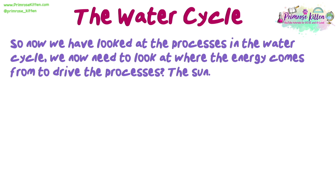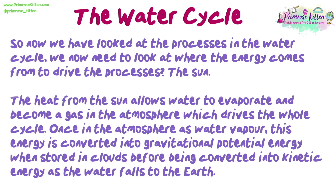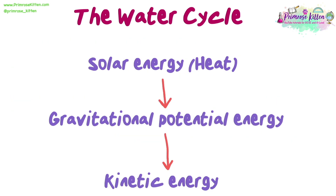Now that we have looked at the processes in the water cycle, we need to look at where the energy comes from to drive them. This is from the sun. The heat from the sun allows water to evaporate and become a gas in the atmosphere, which drives the whole cycle. Once in the atmosphere as water vapour, this energy is converted into gravitational potential energy when stored in clouds, before being converted into kinetic energy as the water falls to the earth. Here is an energy conversion flow chart to demonstrate this: solar energy (heat) → gravitational potential energy → kinetic energy.